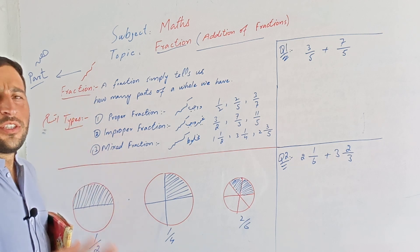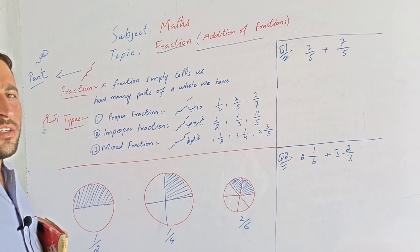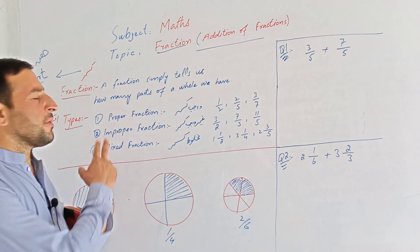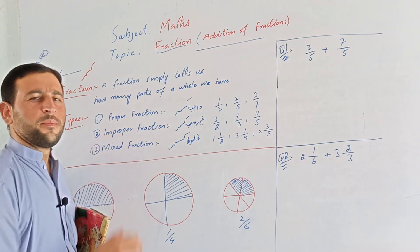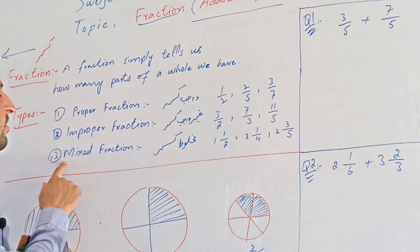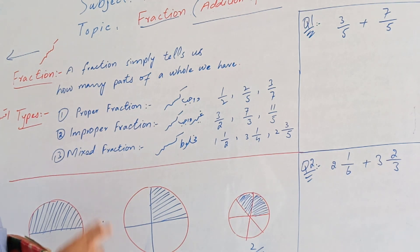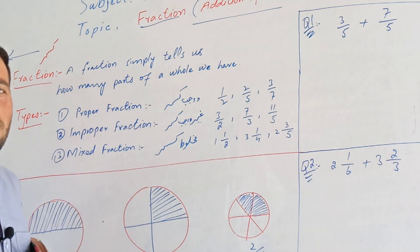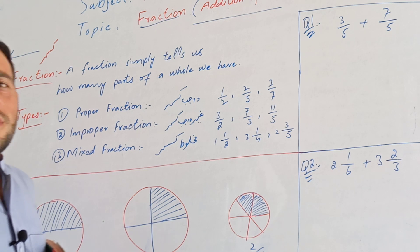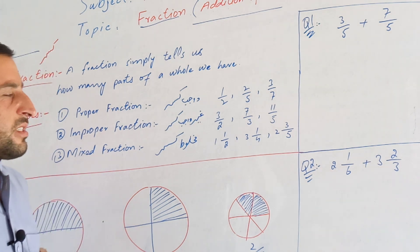Fractions are of three types: the first is a proper fraction, the second is an improper fraction, and the third is a mixed fraction. All three types are important.